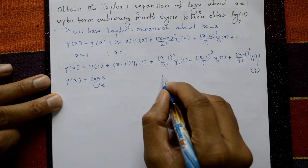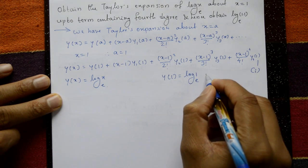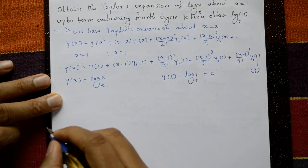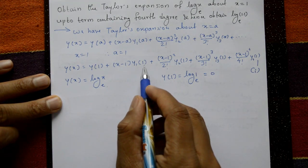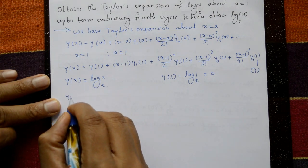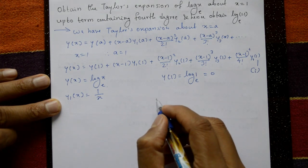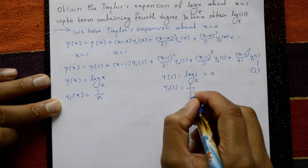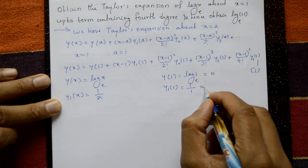Put x = 1: y(1) = log 1 (base e) = 0. Next, differentiate to get y₁(x) = 1/x, so y₁(1) = 1/1 = 1.